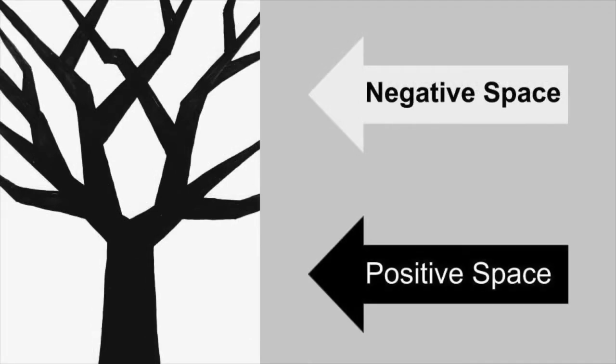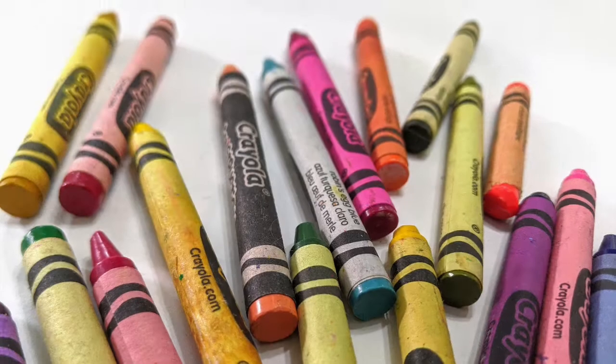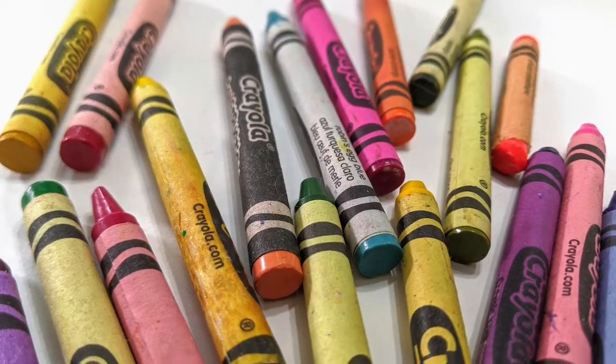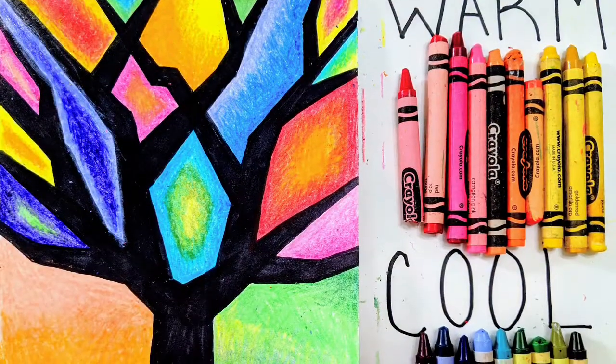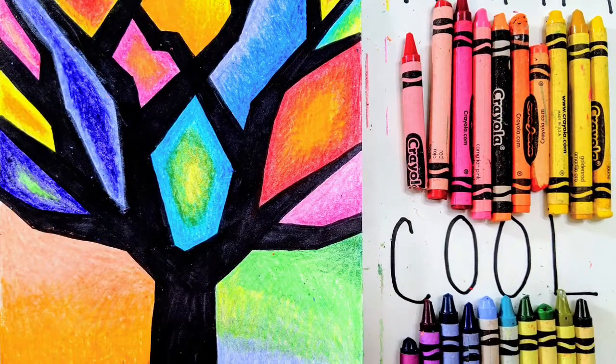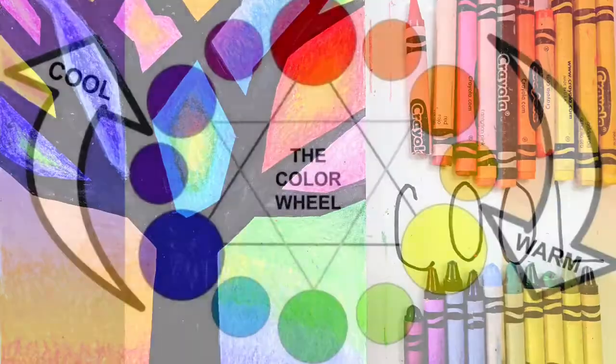The positive space is the actual object or shapes within an artwork. When we color today we're not going to use just any colors. We're going to be blending warm with warm and cool with cool. Let's talk about what that means.